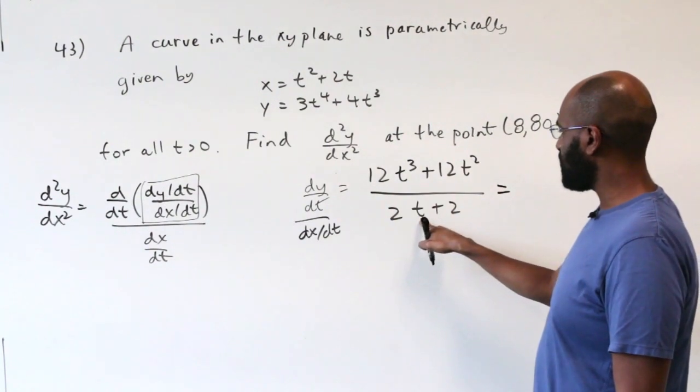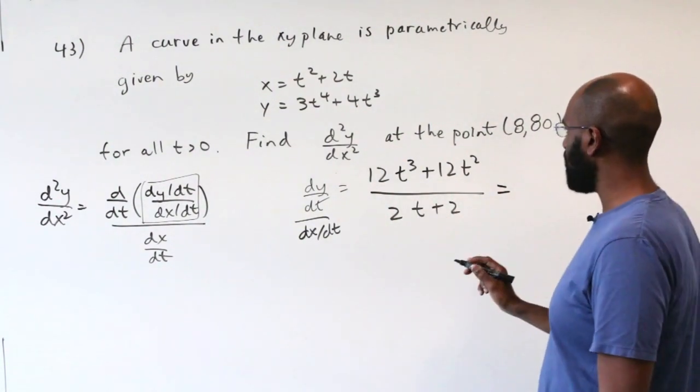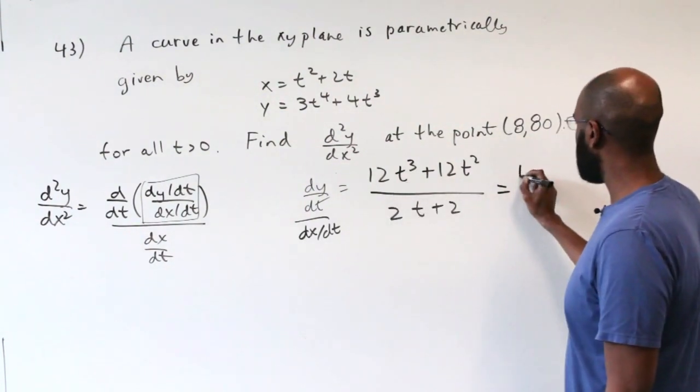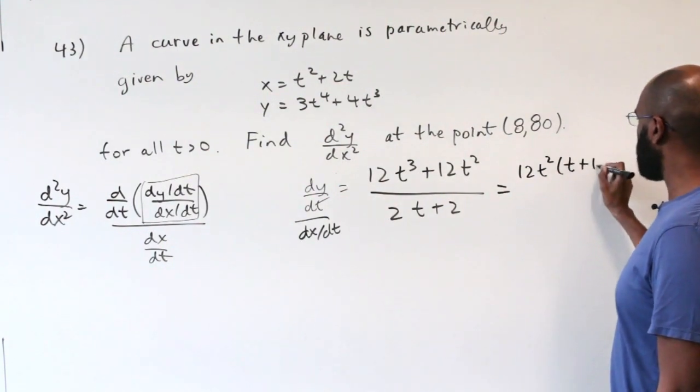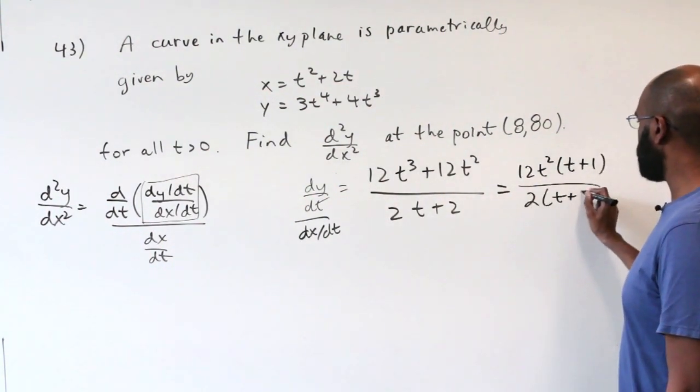We see here that we have a common factor. We have 12t² times (t + 1) on the numerator and 2 times (t + 1) on the denominator. And factoring these, we get explicitly that the derivative quotient that we wanted is 6t².